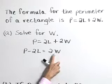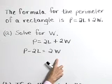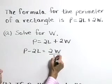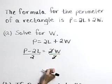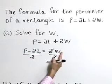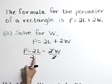Continuing to solve for W, let's divide both sides by 2 so that it cancels from the right, and we have W is equal to P minus 2L over 2.